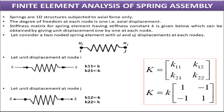For that, the basic thing is the stiffness matrix. The stiffness matrix is nothing but a representation of resistance to displacement. That is what is called the stiffness matrix. The definition of stiffness is force per unit displacement — that is called stiffness.